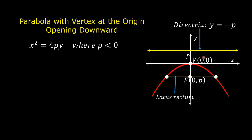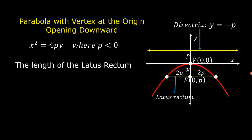The distance of the directrix from the vertex is p, and the distance of the focus from the vertex is also p. The distance from the focus to one endpoint of the latus rectum is 2p, and to the other is also 2p. The length of the latus rectum equals the absolute value of 4p, or the absolute value of the sum of 2p and 2p. So the latus rectum is equal to the absolute value of 4p.